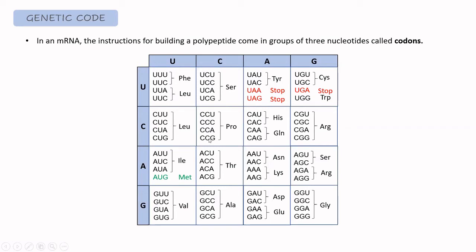For example, four different codons all encode for proline, and similarly for serine. We also have stop codons, which do not encode for any amino acid — these tell the ribosome where to stop the translation. We also have one starting codon, the AUG, which always encodes for methionine and is the starting point of the translation.